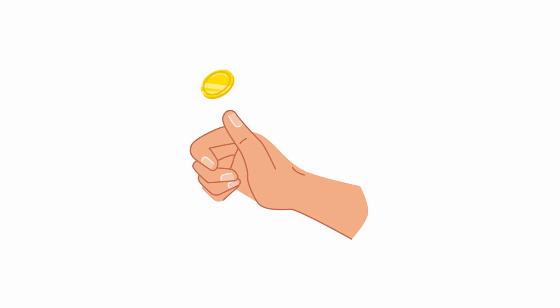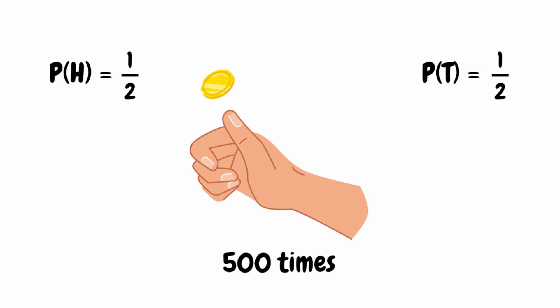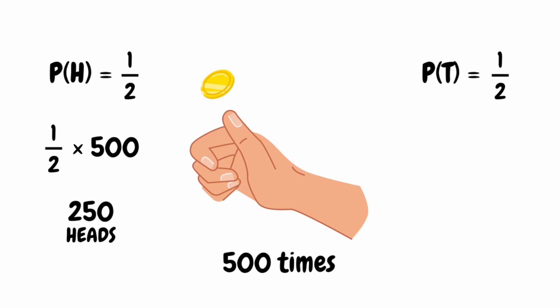Let's take a look at this example of flipping a fair two-sided coin. When we flip a fair two-sided coin the probability of the coin landing on heads is one half, and the probability that the coin lands on tails is also one half. If we flip this coin 500 times, to find the expected frequency for heads we take the probability of one half and multiply that by 500, which gives us 250. So we would expect the coin to land on heads 250 times.